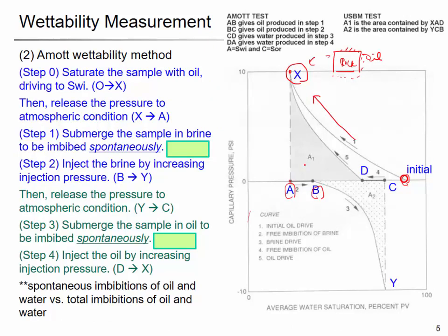You put the rock core in brine, and the brine will imbibe and the oil will come out, so the water saturation increases from A to B. After spontaneous imbibition, you inject the brine with pressure by increasing the pressure, so that the water saturation will increase to point Y.